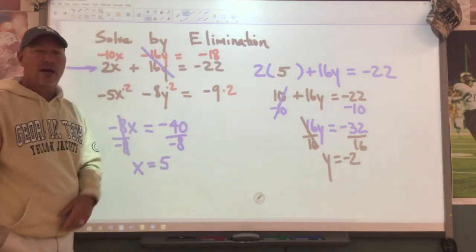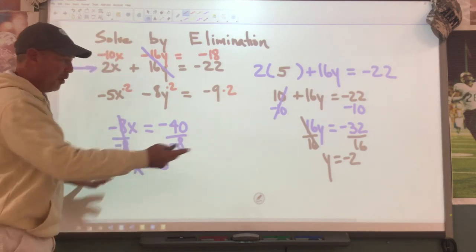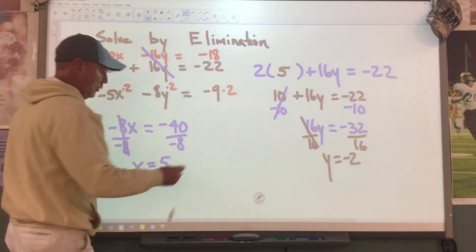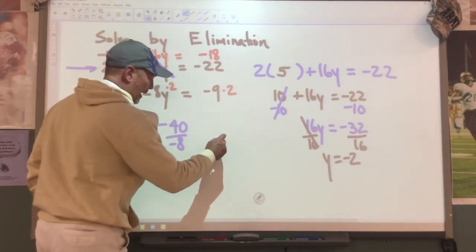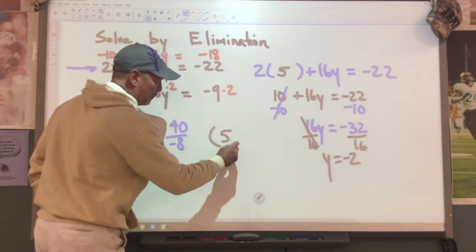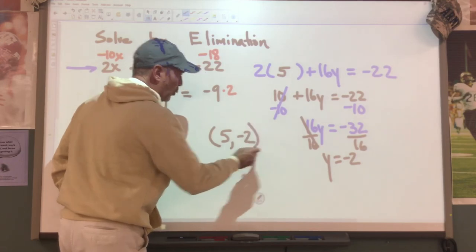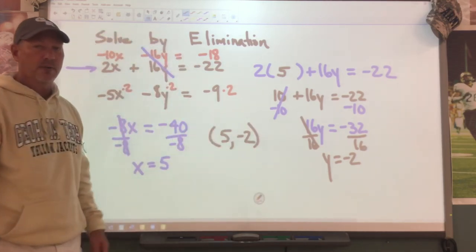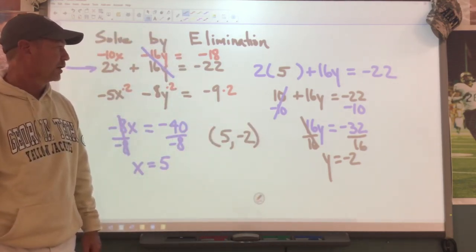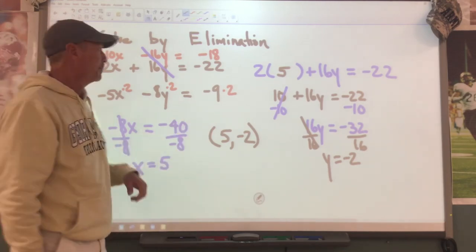How should I write my answer? You're going to write it as an ordered pair: x is 5, y value is negative 2. We write this as an ordered pair. That's elimination. Let's go to another problem.